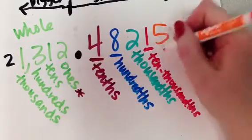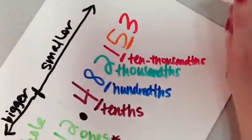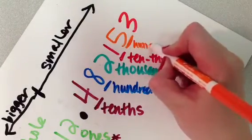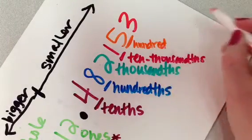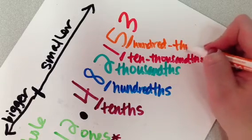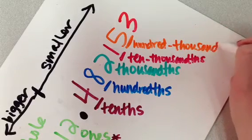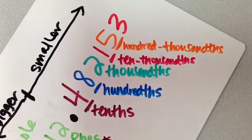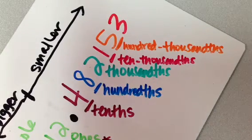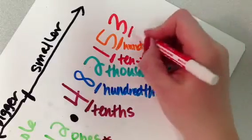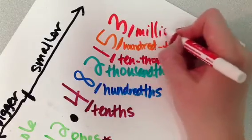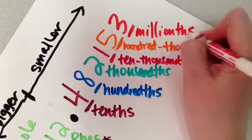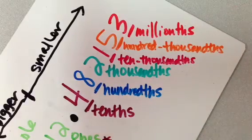He is in the hundred-thousandths place. Hundred-thousandths. I'm off, I'm off the screen. And that last number right there, just like on the other side over there, is in the millionths. Millions.